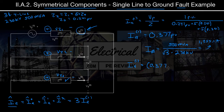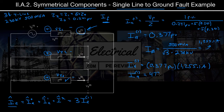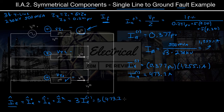To get IA1 in amps, we multiply 0.377 PU by 1255.1 A, giving IA1 = 473.2 amps. The total fault current IA equals IA0 + IA1 + IA2 = 3 × IA1 = 3 × 473.2 A, which gives a fault current of 1419.5 amps.